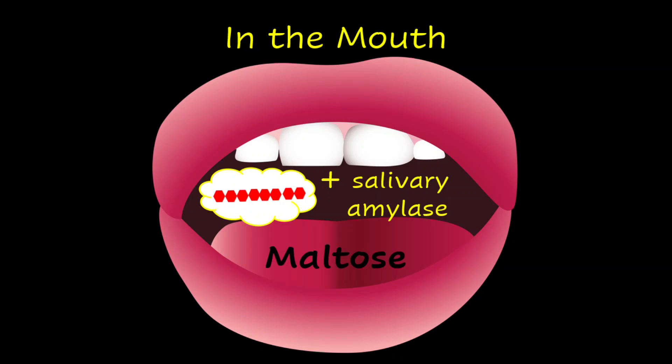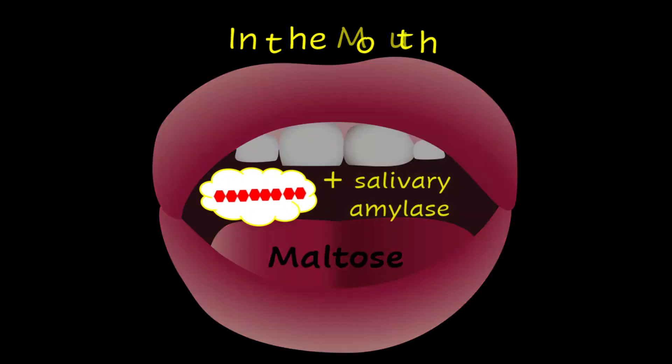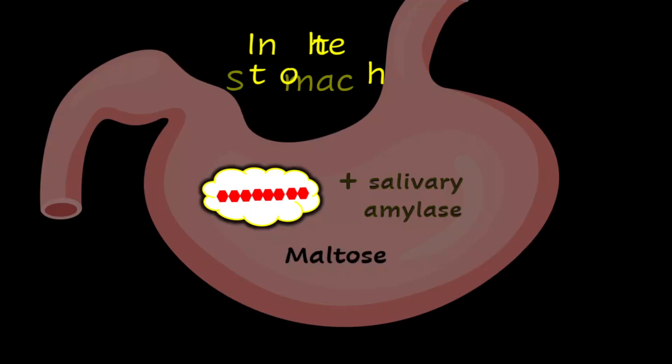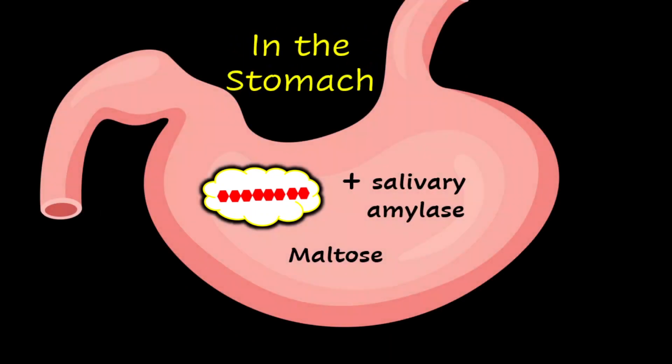All of this will be in a mixture in the form of a bolus and travel to the stomach. Once all of this reaches the stomach, the remaining starch, the maltose, and the salivary amylase are present — and there's something interesting happening.